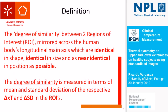First, we start with the definition of thermal symmetry that we formulated at the Morgan. That is, basically, the degree of similarity between two regions of interest mirrored across the longitudinal main axis of the human body — identical in shape, identical in size, and as close as possible in angle from the camera. The degree of similarity is measured in terms of difference in mean temperature and difference in standard deviation of that region of interest. I tried kurtosis and skewness but didn't get any useful conclusions, so I excluded them.